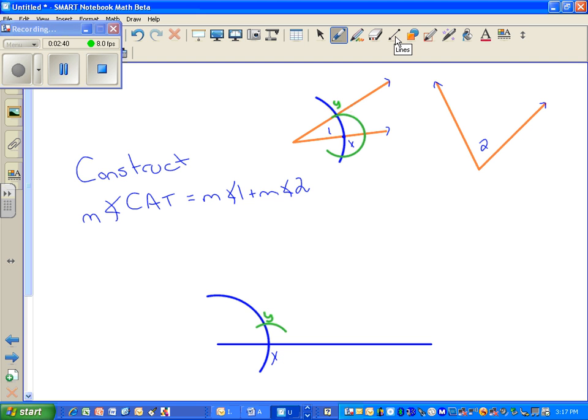Okay, I have a vertex. I have a point of intersection. I can now complete the copying of that first angle. So I'm going to go from my vertex through that point of intersection, and I've copied angle 1.